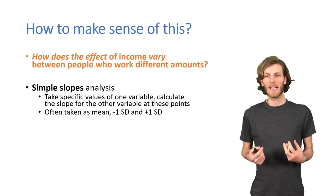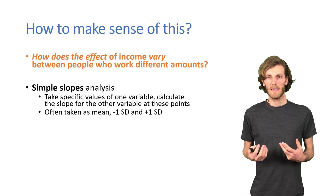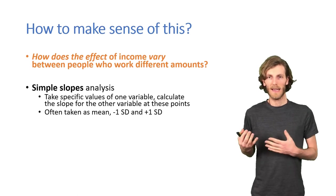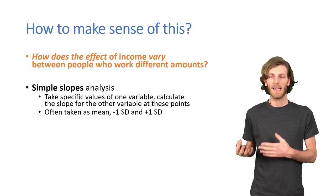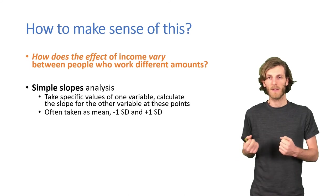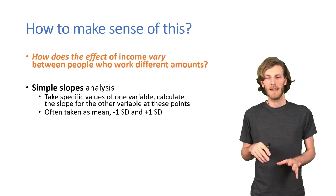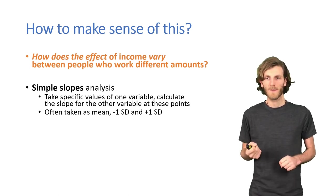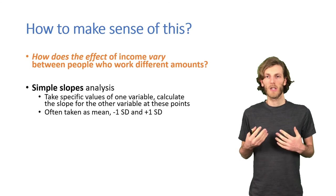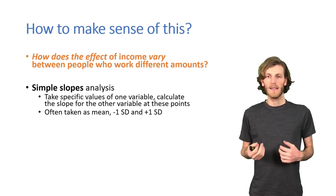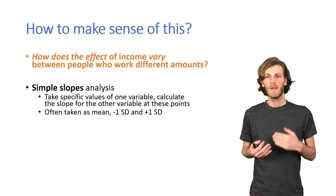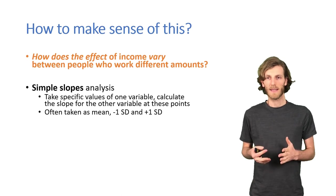Typically that's done at the mean of the moderator, one standard deviation below the mean, one standard deviation above the mean. So that we get three different slopes that describe the effect of income on life satisfaction.